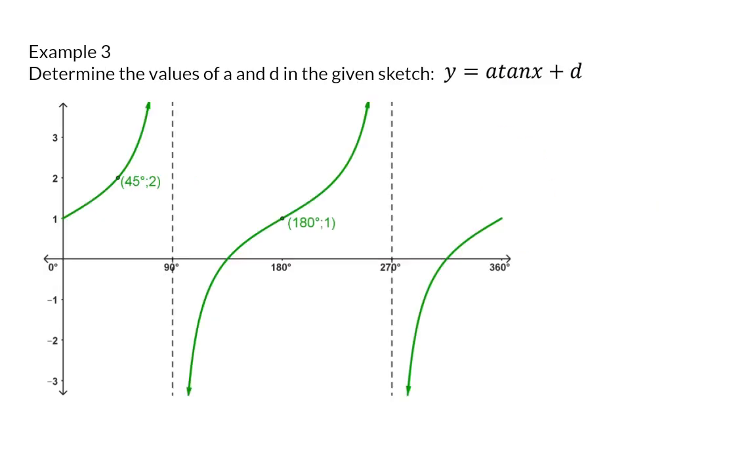Example 3. Determine the values of a and d in the given sketch, and here we are working with the tan graph. The tan graph does not have an amplitude, therefore we need to determine the a value in a different way.